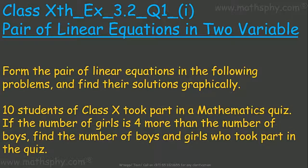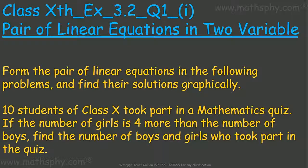This question says: form the pair of linear equations in the following problems and find the solutions graphically. The problem states that 10 students of class 10 took part in a mathematics quiz. If the number of girls is 4 more than the number of boys, find the number of boys and girls who took part in the quiz. We have to solve this graphically — form linear equations, put them into the graph, and get the solutions.